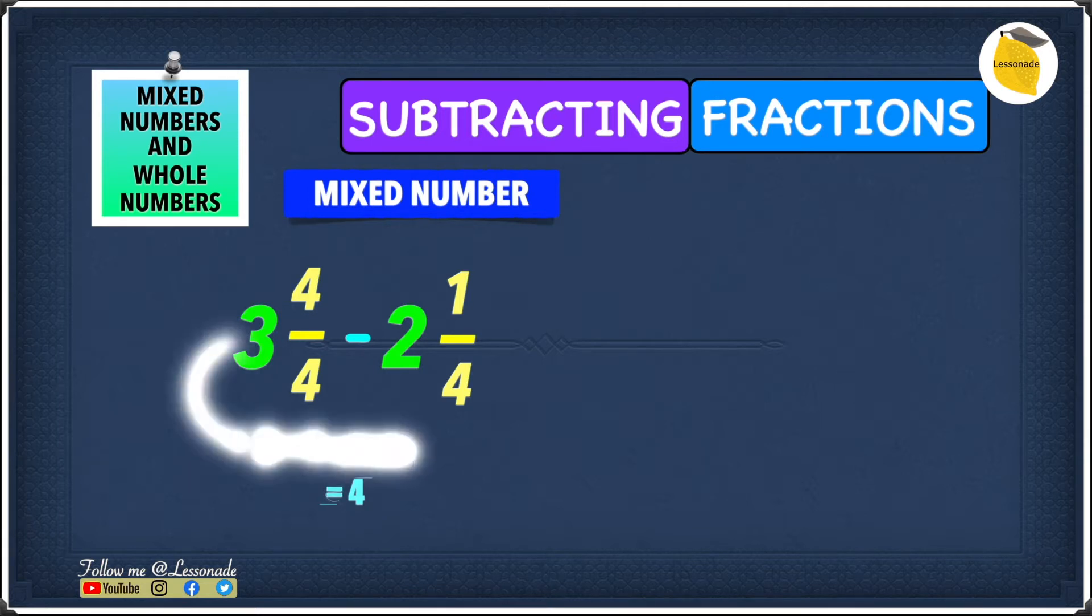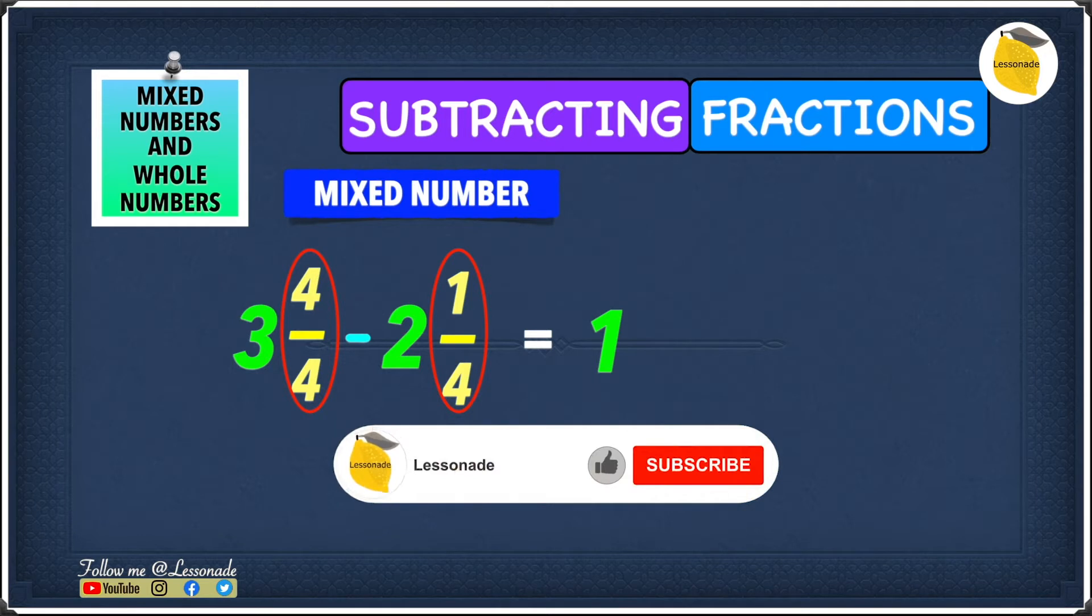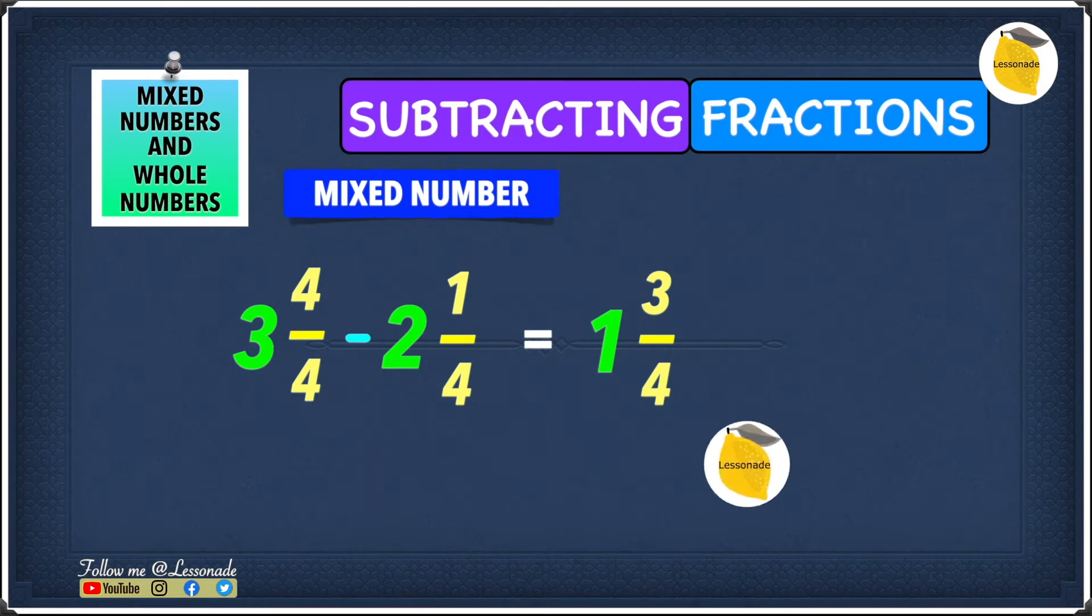So now, since we've had a look at this, you can do the question, and it's very simple now. Let's start with subtracting the 3 and the 2. 3 minus 2 will give you 1. Now we can subtract the fractions. 4/4 minus 1/4 will give you 3/4. So this means our answer to this question is 1 3/4.